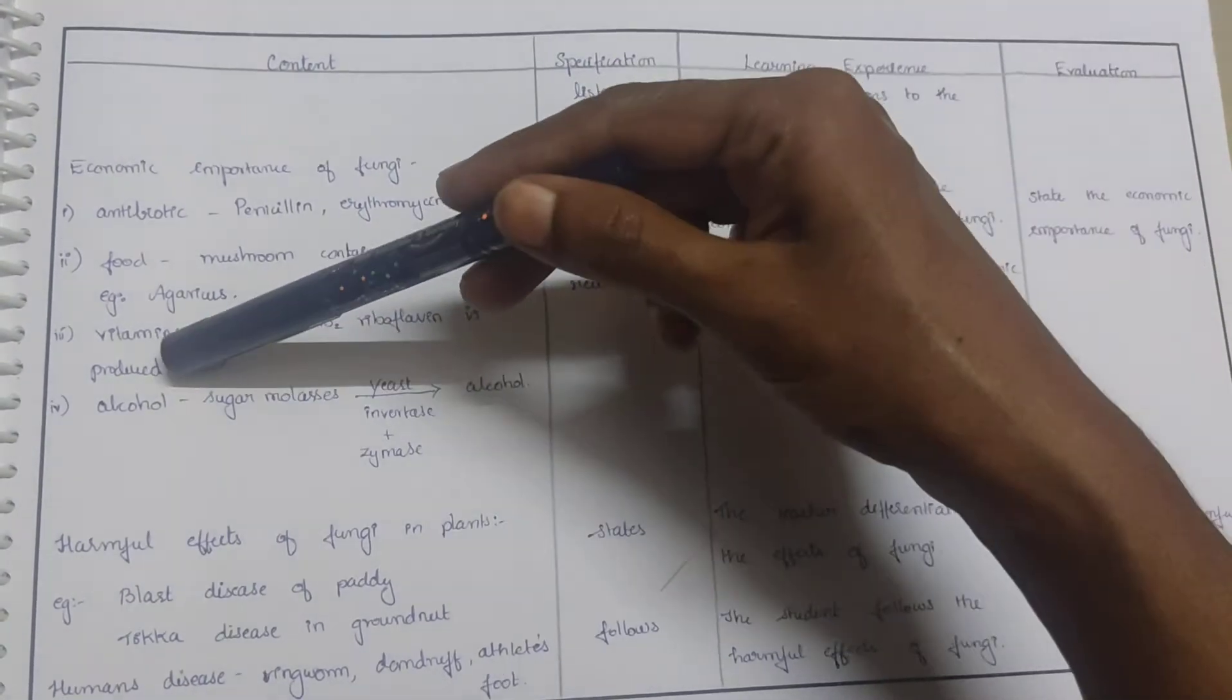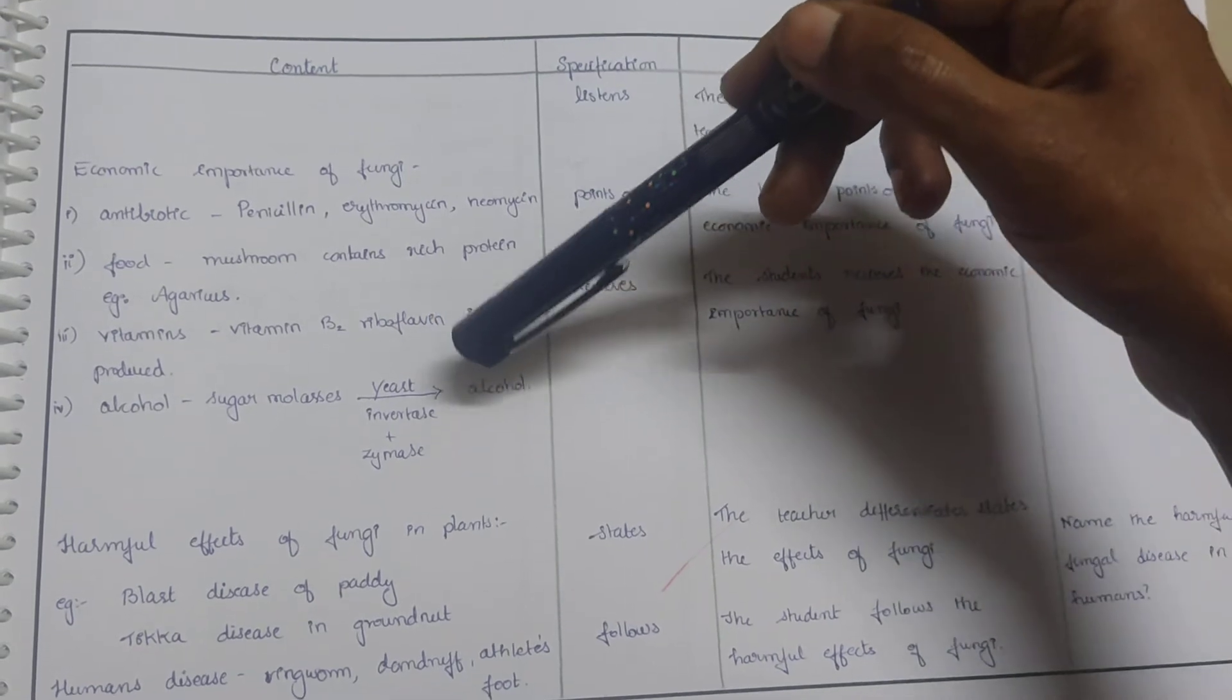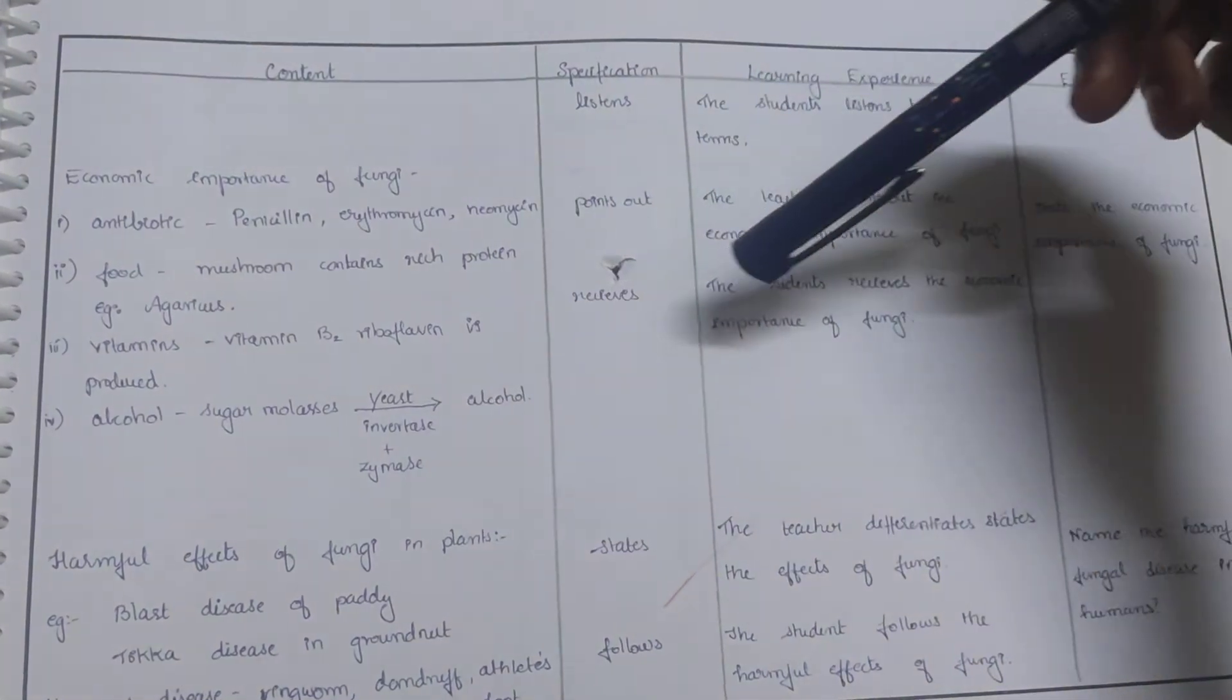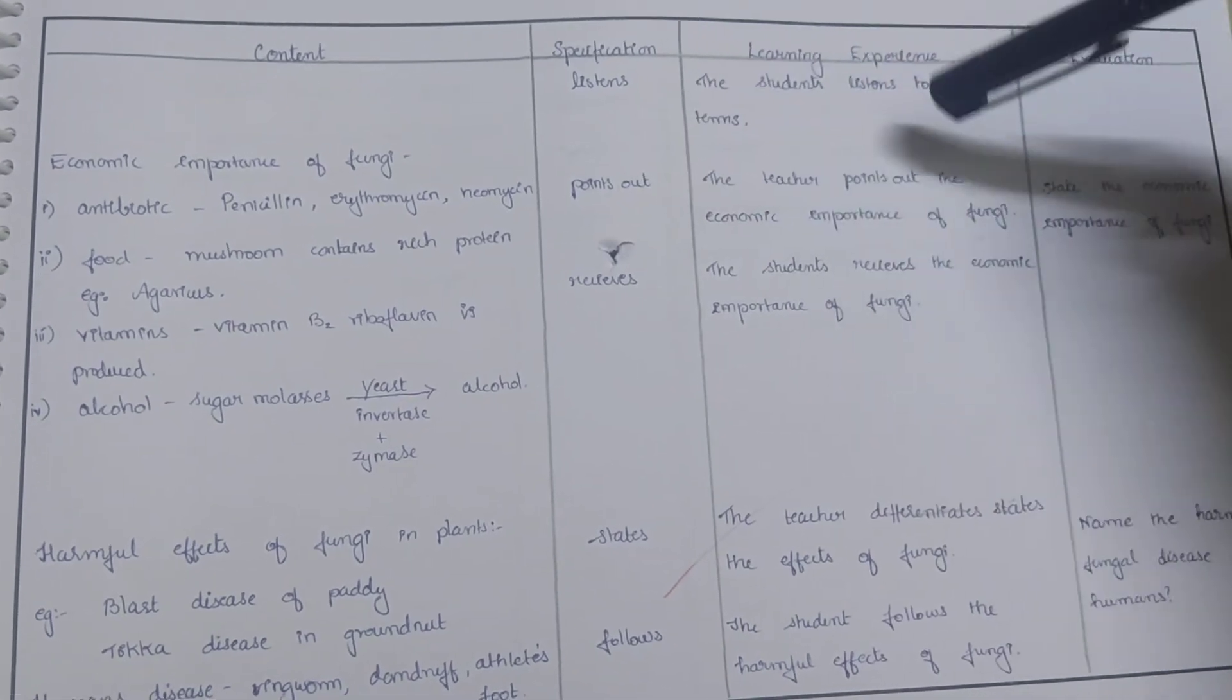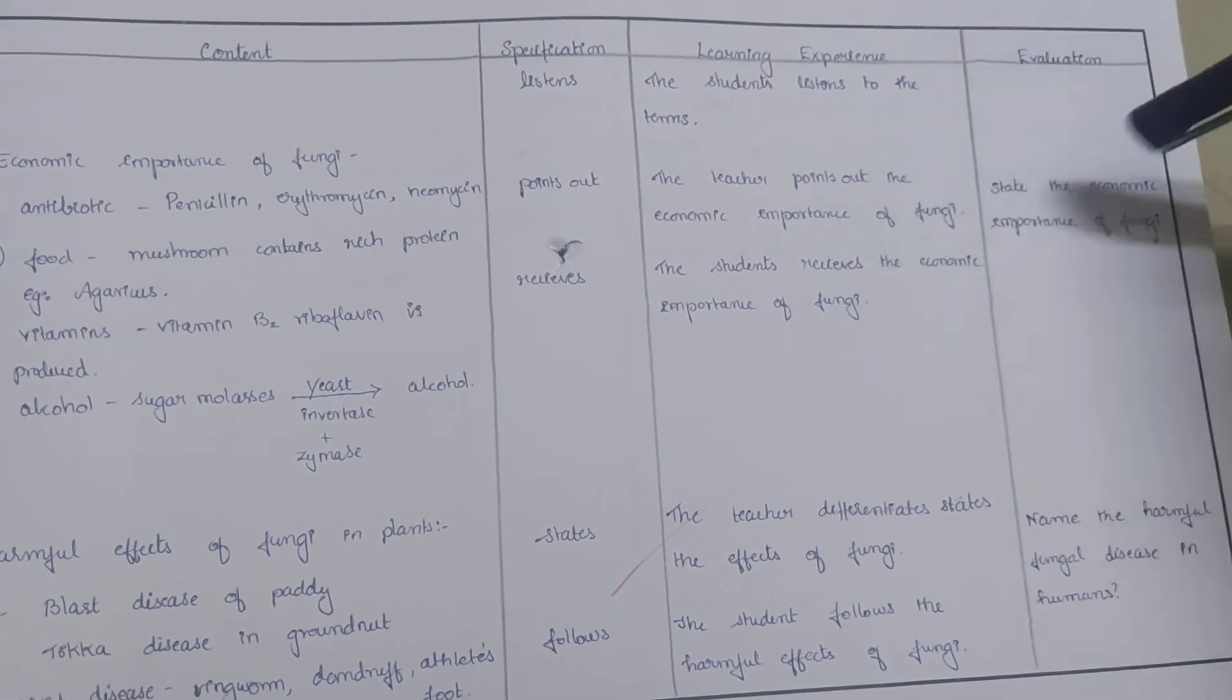Vitamins: vitamin B2 riboflavin is produced. In alcohol production, sugar molasses in the presence of yeast which acts as invertase gives alcohol plus zymase. The teacher points out the economic importance of fungi and the student receives the economic importance of fungi.